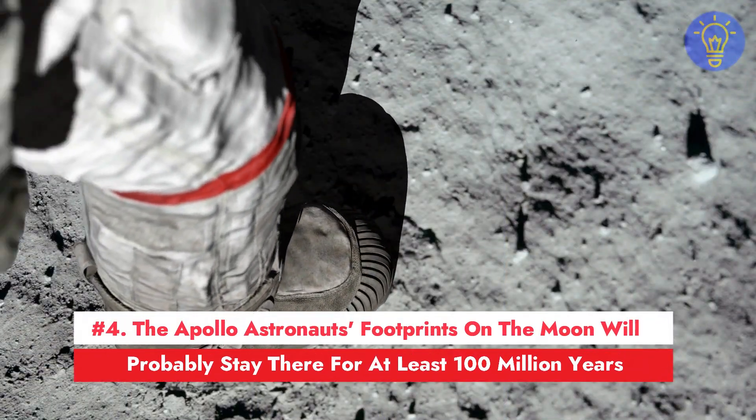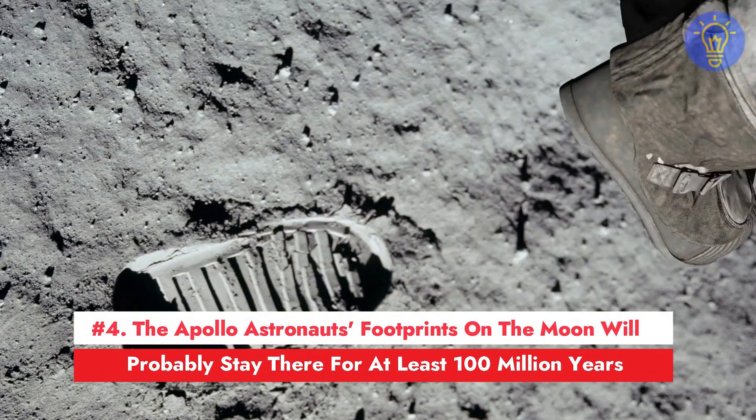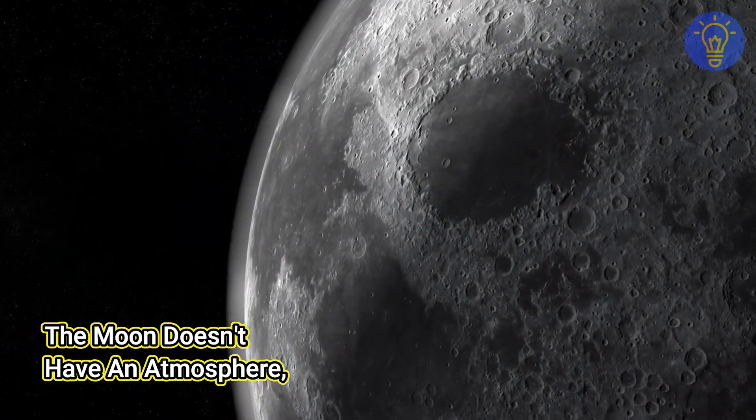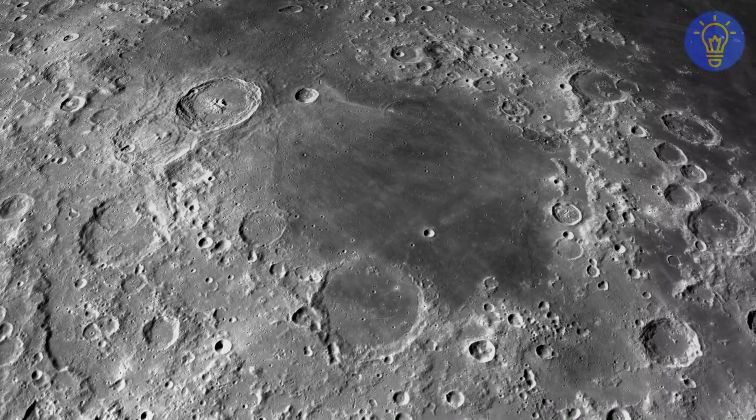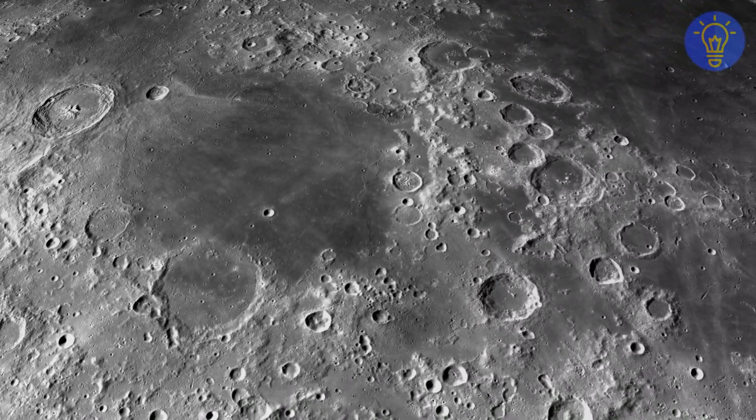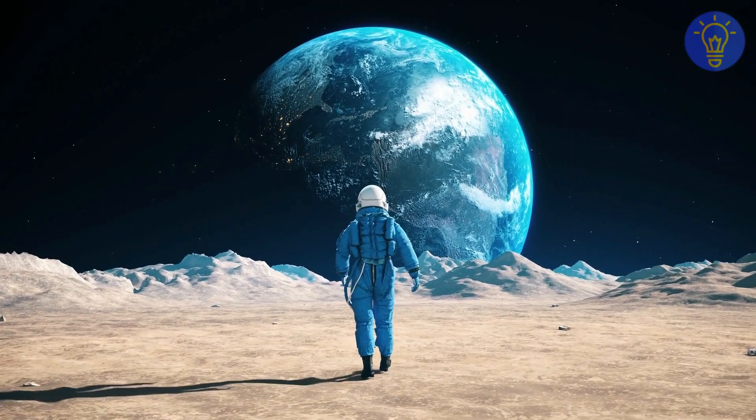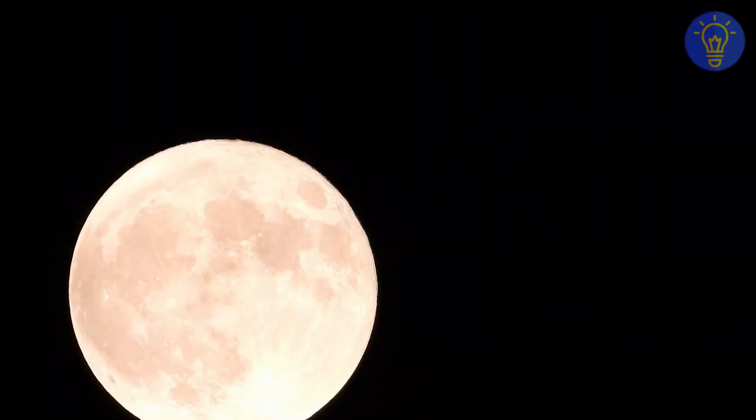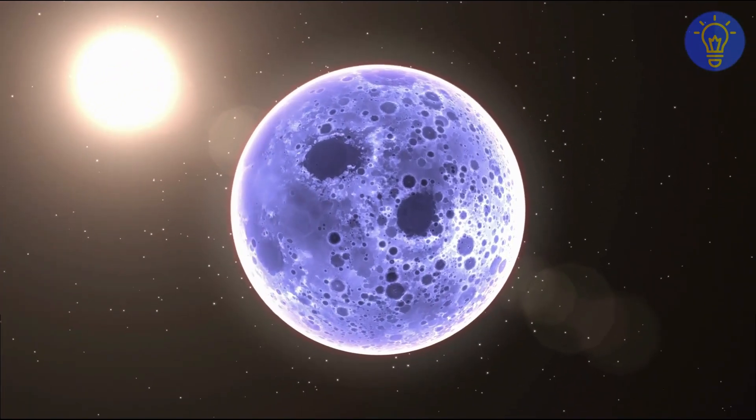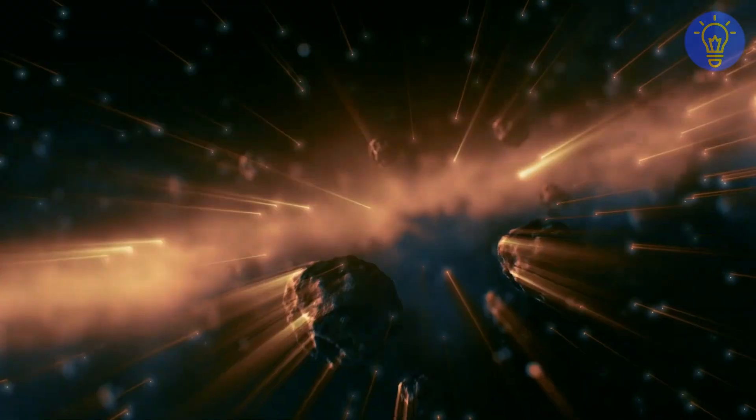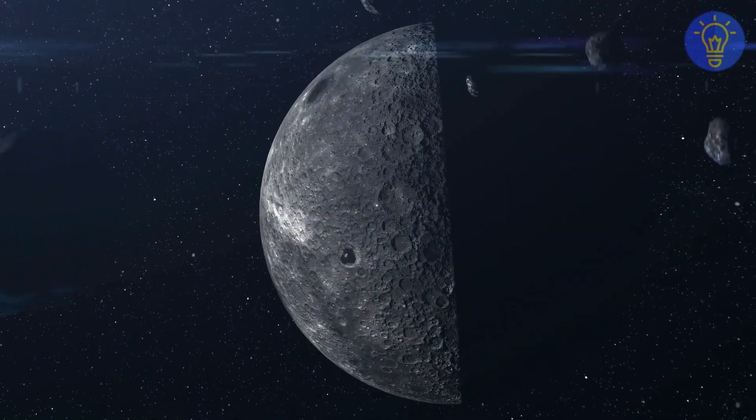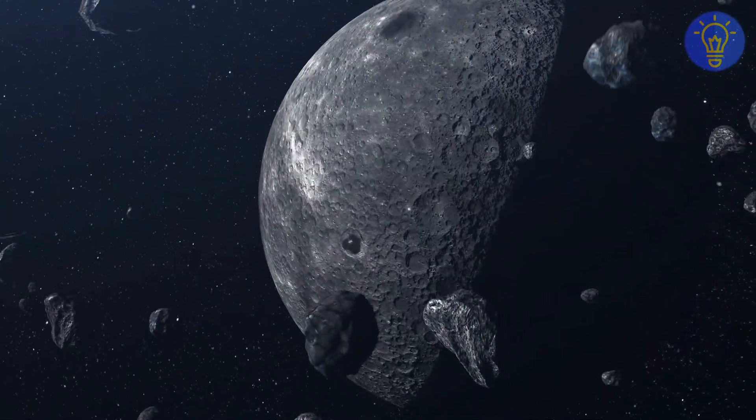Number 4. The Apollo astronauts' footprints on the moon will probably stay there for at least 100 million years. Since the moon doesn't have an atmosphere, there's no wind or water to erode or wash away the Apollo astronauts' mark on the moon. That means their footprints, rover prints, spacecraft prints, and discarded materials will stay on the moon for a long time. They won't stay on there forever, though. The moon is still a dynamic environment. It's constantly bombarded with micrometeorities, which means that erosion is still happening on the moon very slowly.